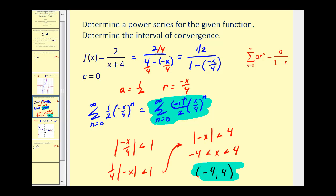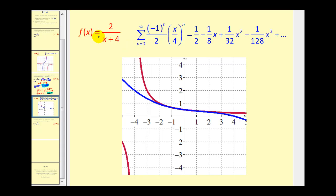Let's look at the graph of this one as well. We have the original function in red and the geometric power series in blue. Graphing the first four terms of the infinite geometric series, we can clearly see that the blue function is a good approximation of the red function when values are close to x equals zero.